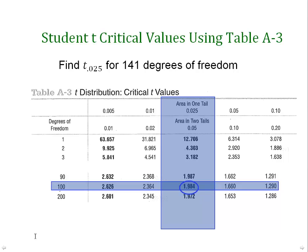For those without a TI-84, you can get the critical values using table A3 in your text. The left column gives degrees of freedom — find the row corresponding to your problem's degrees of freedom. In our problem we have 141 degrees of freedom, but the table jumps from 100 to 200. When that happens, find the closest row — we'll use 100. Then pick the right column: for a 95% confidence level, the area in two tails is 0.05, giving critical values of 1.984, which is close to our calculator result.